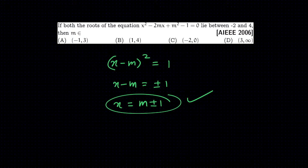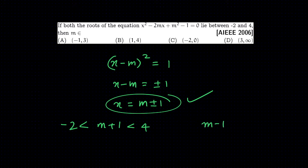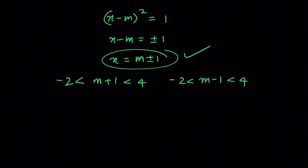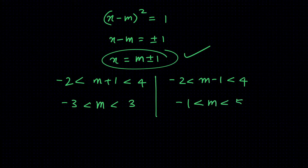The two roots are m plus 1 and m minus 1. For both roots to lie between minus 2 and 4, we need minus 2 less than m plus 1 less than 4, giving minus 3 less than m less than 3, and minus 2 less than m minus 1 less than 4, giving minus 1 less than m less than 5.